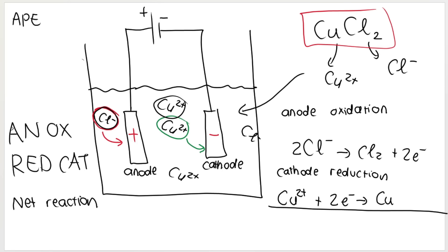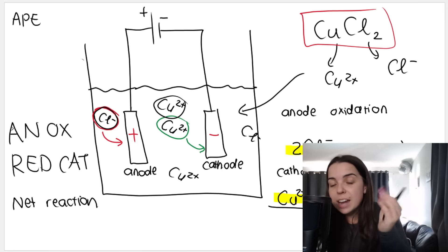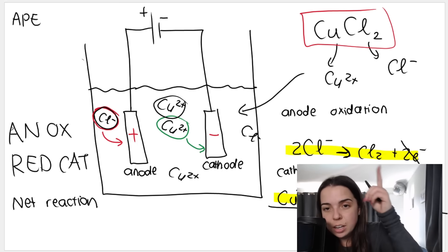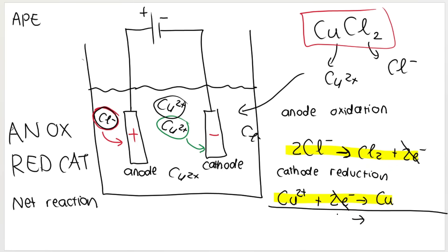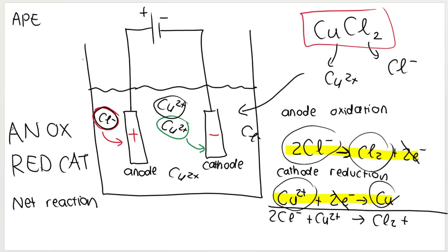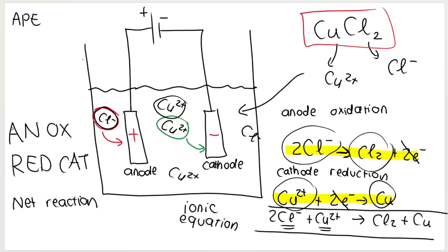How do you write the net reaction? I've rewritten the half reactions: the oxidation half reaction and the reduction half reaction. I've got 2 electrons here and 2 electrons here. When doing the net reaction, you look on either side of the arrow, and if the electrons are equal on both sides, you cancel them. What's left is 2Cl-minus plus Cu2-plus on the left-hand side, and Cl₂ plus copper on the right-hand side. That's the net ionic equation — it's the ionic equation and it's all in its ionic form.